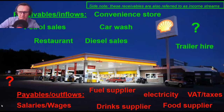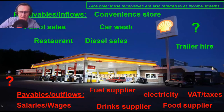At the bottom we've got payables and outflows — there's a long list of them: VAT (value-added tax), food suppliers, fuel suppliers, salaries and wages. This list is normally longer. Can you think of another example or two? One thing I did leave off my list was insurance. You definitely need insurance, and of course it's quite a dangerous place with diesel and fuel — I would imagine the insurance is quite high on a monthly basis.